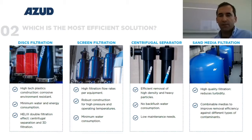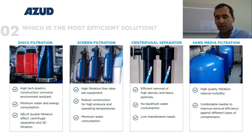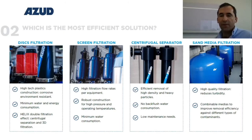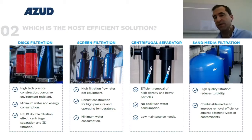The centrifugal separator can be very practical but has a very strong limitation, which is the filtration degree. It is not a physical barrier like the other technologies — it is a separation of particles, and it will efficiently remove high-density and heavy particles, normally over 80 microns.